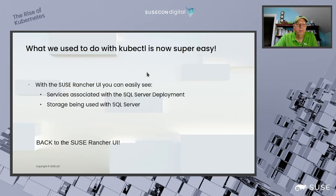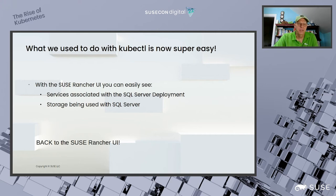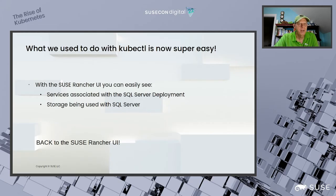Everything I'm going to show you here you could also do with kubectl commands — pull services, get storage, pull all this information from the command line. You still can do it that way. But for folks less inclined toward the command line, you can use the Rancher UI. Let's look at the Rancher UI and pull some information about our deployment.